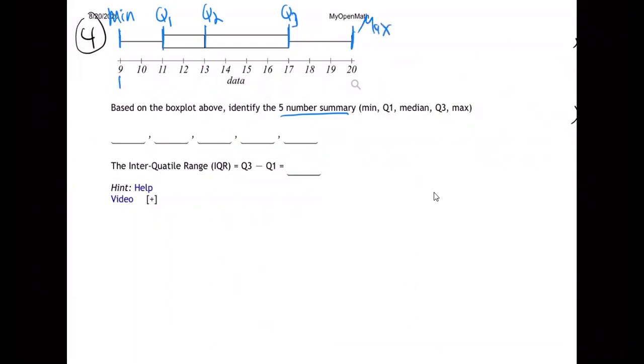Literally, you just bring those numbers down. So 9, 11, 13, 17, 20, just like that. It's just where the lines are.